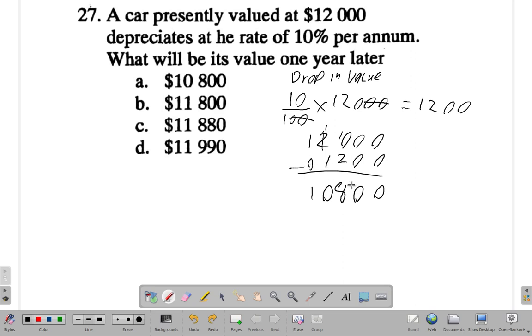There's an invisible 0 here. So it's $10,800. The answer is A.